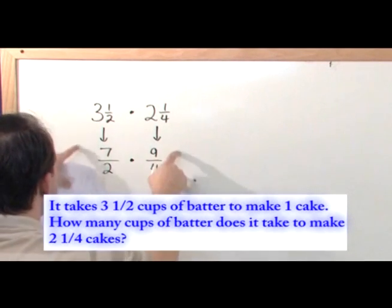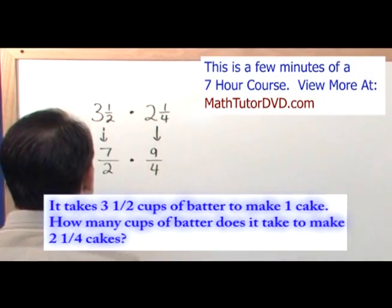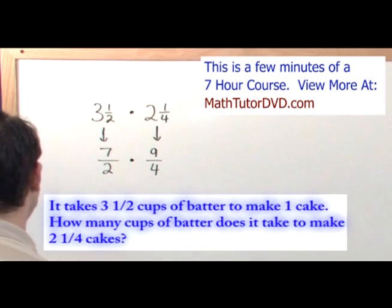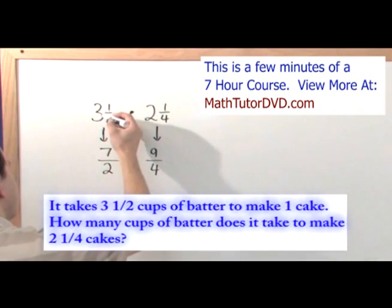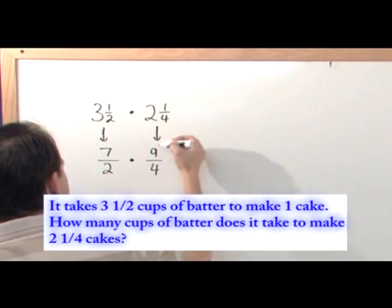So these representations of these fractions here are exactly the same as these up here. It's just that these look different, but they're exactly the same, they mean the same thing, they mean the same amount. Two times three is six plus one is seven over two. Four times two is eight plus one is nine over four. Now let's go ahead and do this multiplication.